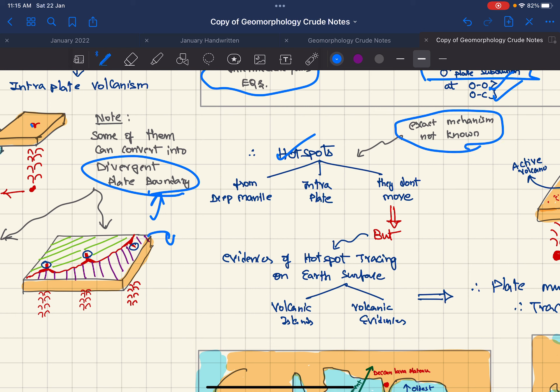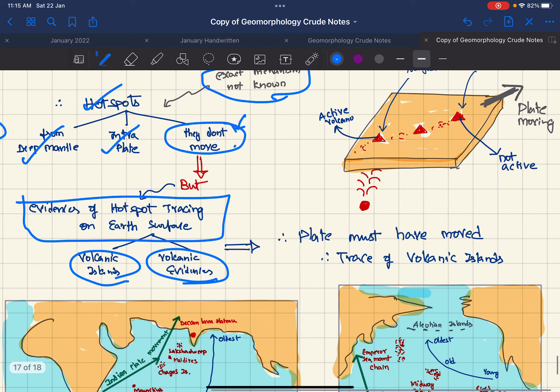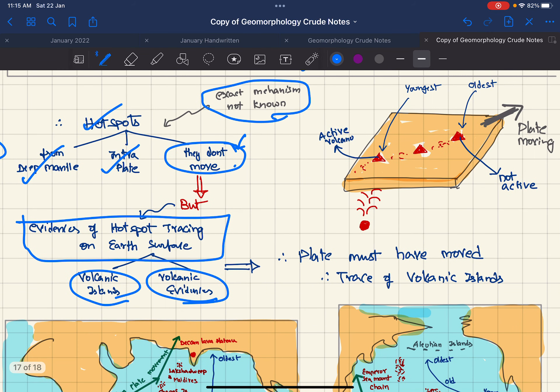What do we know about the hotspots? The exact mechanism is not known, but we know that they are sourced from deep mantle, they are intraplate, and they do not move. Since they do not move, but there are evidences of hotspot tracing on earth surface which are volcanic islands and volcanic evidences. From this we can say that the plate is moving and the hotspot is fixed.